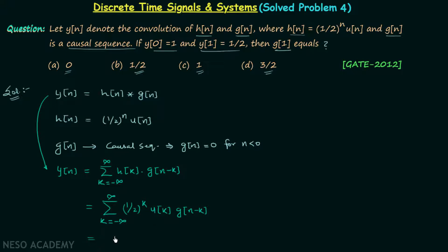So in the next step we write the summation from k equal to 0 to infinity of (1/2)^k multiplied by g[n-k]. Now we will focus on g[n-k].